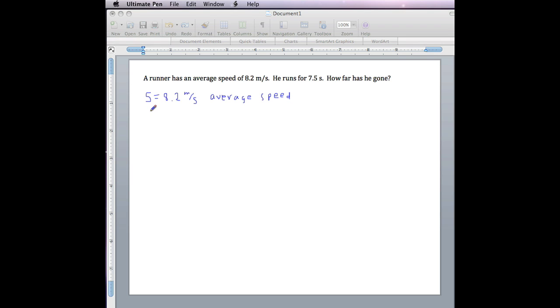The other information in the problem is that the time the runner is running is 7.5 seconds, so T equals 7.5 seconds. We're looking for how far he's gone. That would be the distance, D.